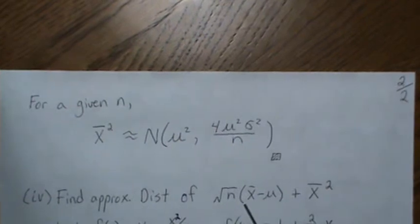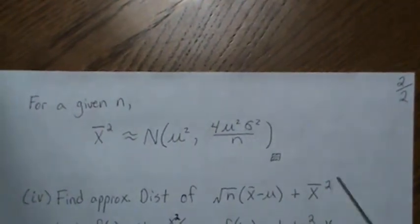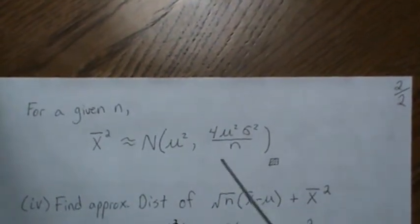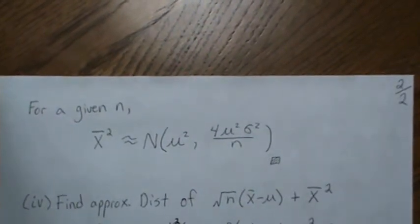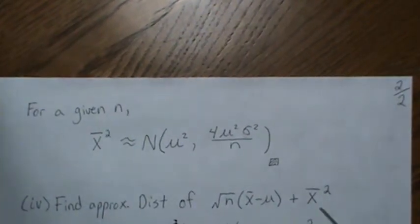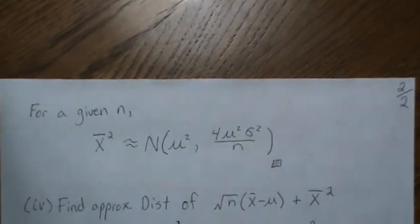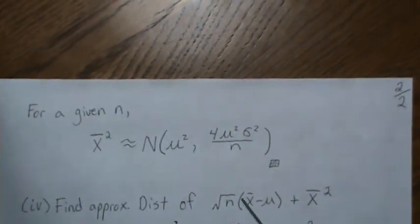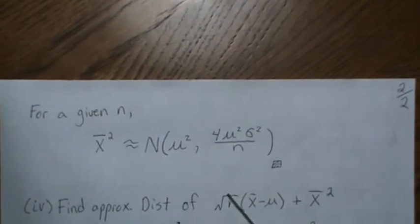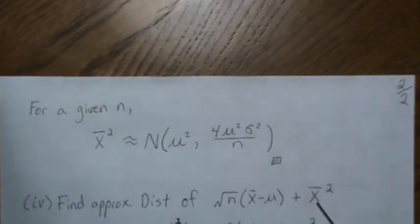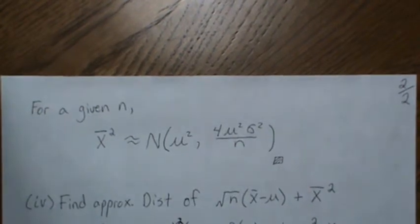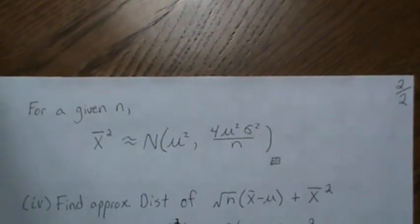Now let's find the approximate distribution of this combined quantity. My first thought was: X-bar is standard normal and X-bar² limits to this normal, so maybe we can use the continuity theorem to say the limiting distribution of these two normals is again normal. But you'd be mistaken, because these two random variables are not independent of each other, so you can't apply that method. If this was X_N and that was Y_N and their limiting distributions were independent of each other, then you could add those two distributions together. But they're not independent, so you can't do that.